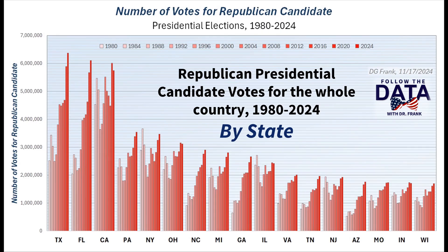This graph shows the first 17 states. For this next set of graphs, I've grouped the states in descending order by total turnout, so that I can use the same vertical scale. Not surprisingly, the number of votes for the Republican candidates are, in general, increasing over the years, because the state populations are also increasing. But notice, in some states, Trump received fewer votes in 2024 than he did in 2020.